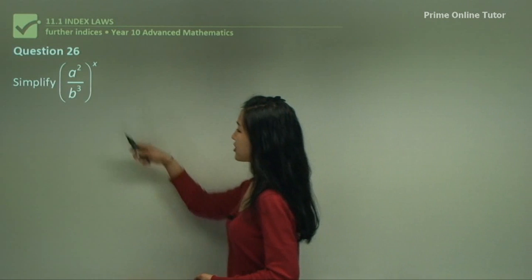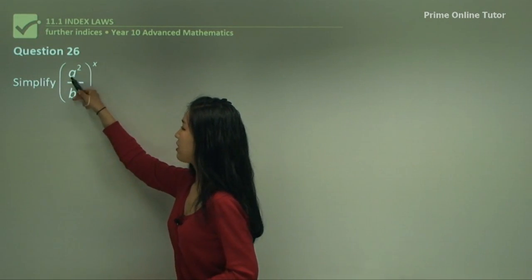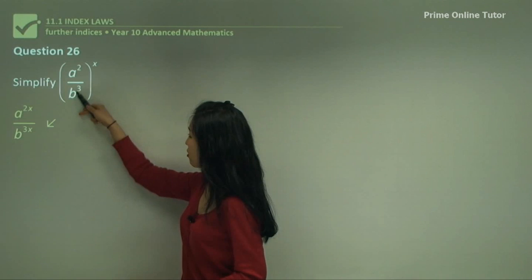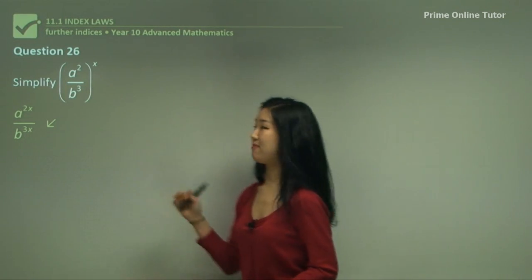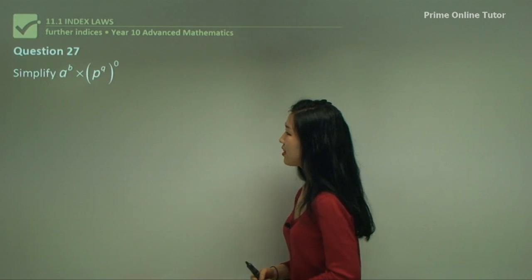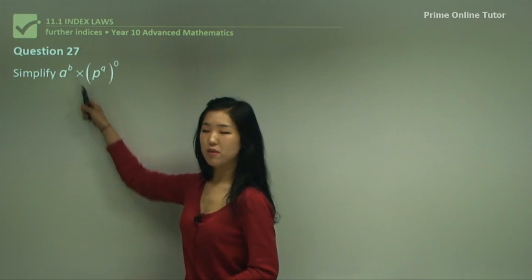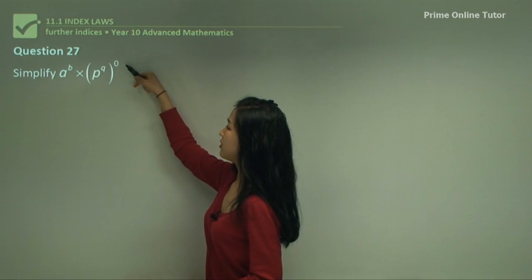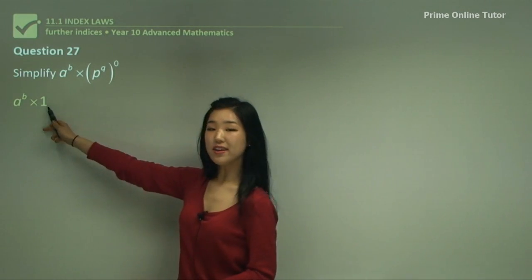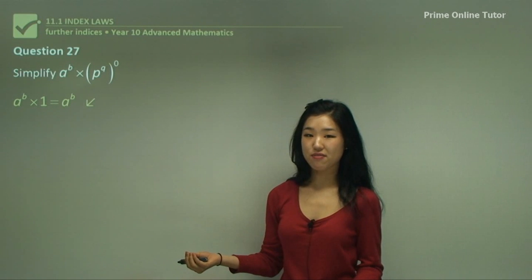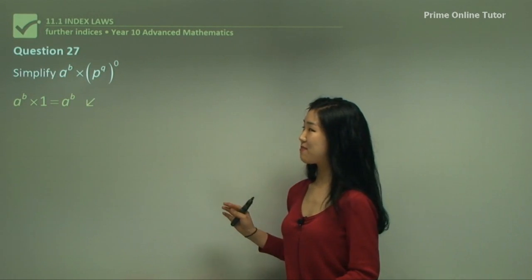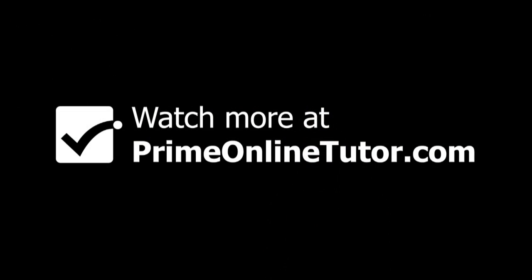Question twenty-six. We have a fraction, but just put the power of x to every single term inside the brackets. So a to the 2 times x, which is 2x, and b to the 3 times x, giving b to the power of 3x. Question twenty-seven: a to the power of b can't be changed further, so leave it. And p to the power of q, the whole thing to the power of 0, means that whole thing is 1. So the final answer is simply a to the power of b. Always remember anything to the power of 0 is 1. That was some basic index laws — thank you.